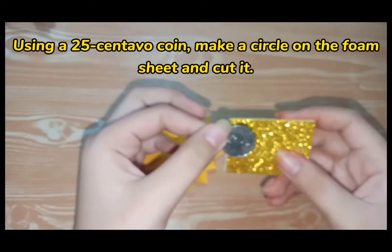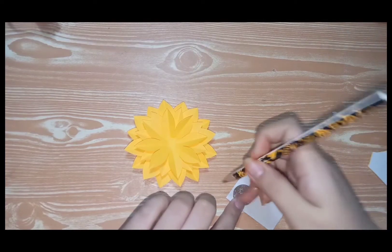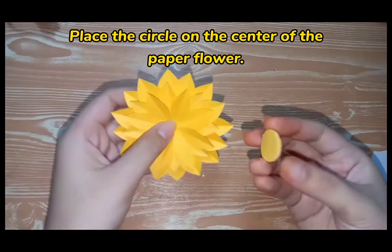Using a 25 centavo coin, make a circle on the foam sheet and cut it. Place the circle on the center of the paper flower.